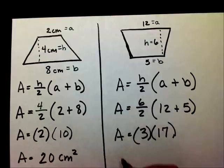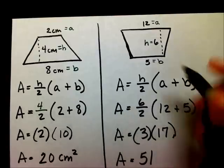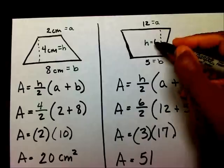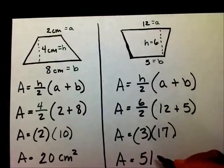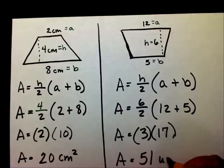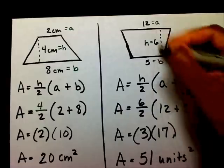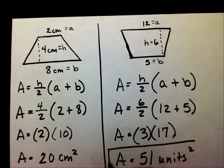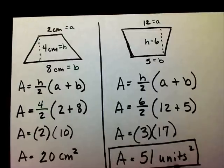So, now I'm going to multiply 17 times 3. Well, 17 times 3 is 51, and whenever they don't give you a measurement here, then you just write units. If they don't give you any units, you just write units. So, it's going to be 51 units squared.